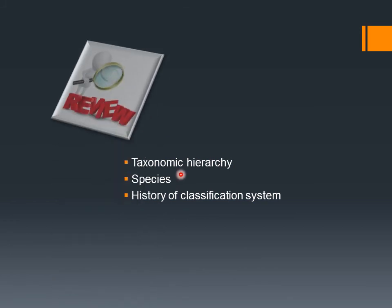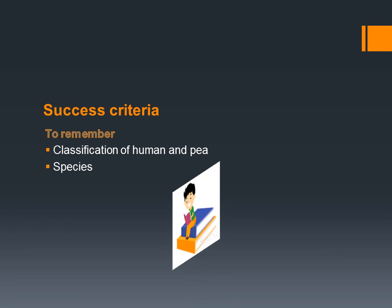Now let's have a review of what we studied today. First, we learned about taxonomic hierarchy. Second, species — which is the basic unit of classification. And lastly, the history of the classification system. Success criteria: remember the classification of human and pea, and remember the definition of species.